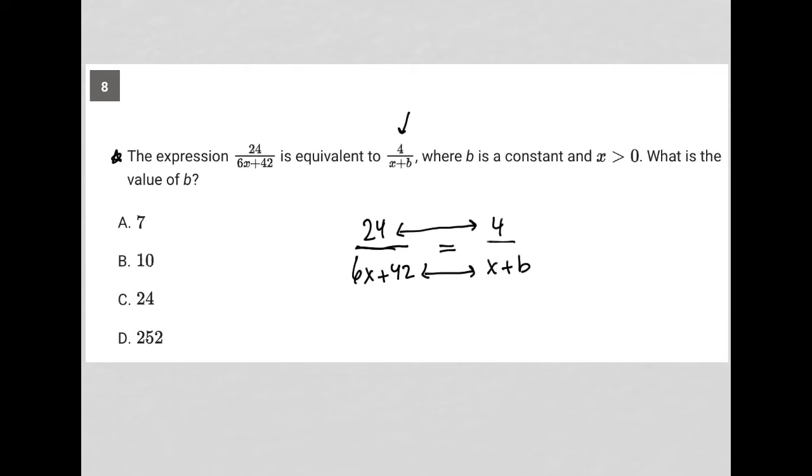So in terms of a comparison of numerators, it looks like I'm just dividing by 6, right? 24 divided by 6 is 4. And between denominator and denominator from left to right, it also looks like I'm just dividing by 6.